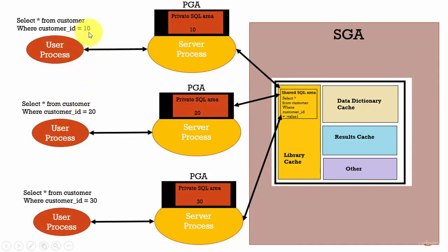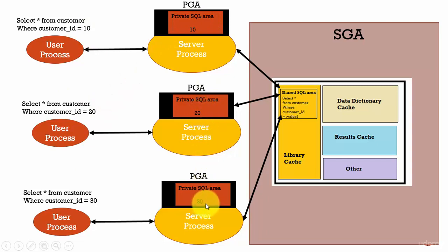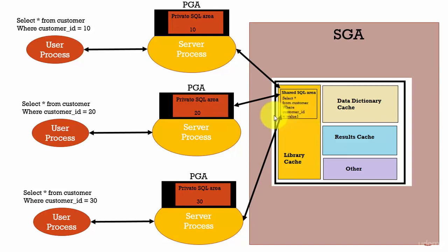Since just the values are different, those values are stored in the Private SQL area — 10, 20, and 30. The common SQL statement parse tree and the execution plan are stored in the Shared SQL area. By doing this, Oracle Database is saving memory.